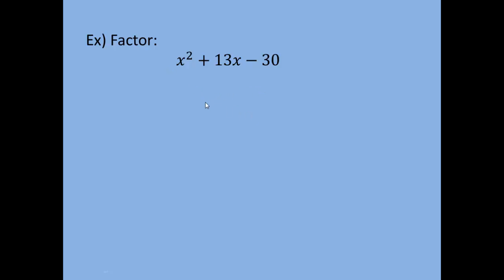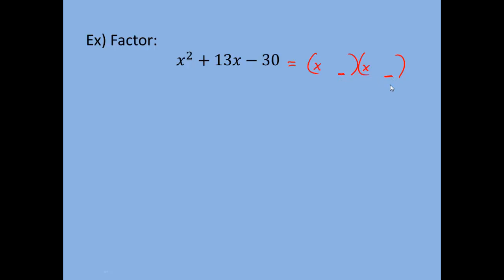Since there is no GCF and we have three terms with a leading coefficient of one, meaning there is no number in front of x squared, we can right away set up two sets of parentheses with an x in front of each of them, and we want to find the numbers that go in the blanks using the method we just described.